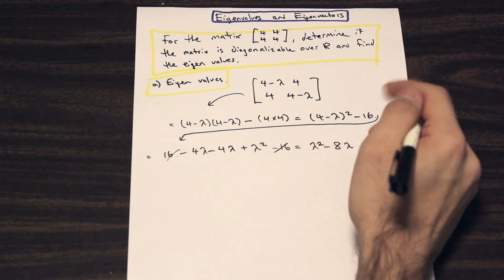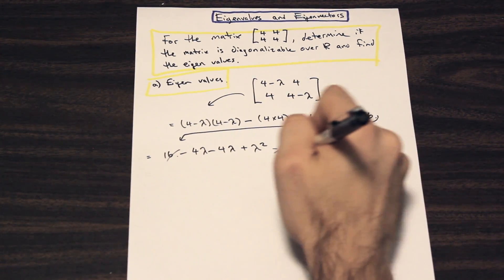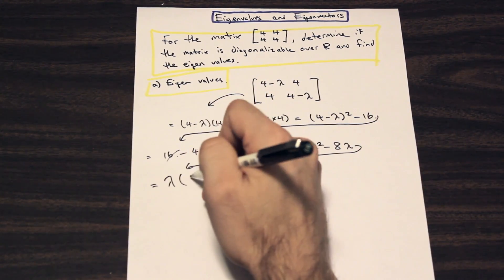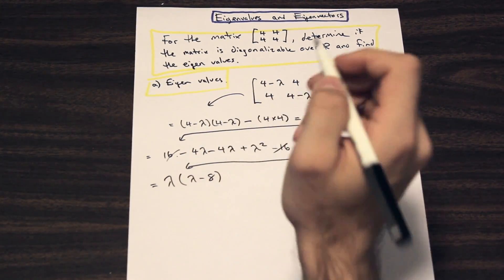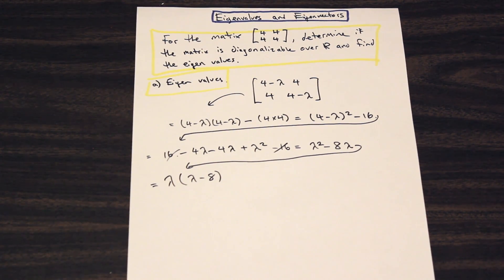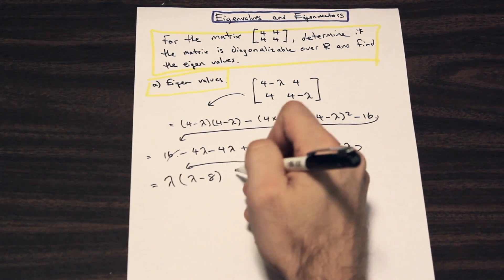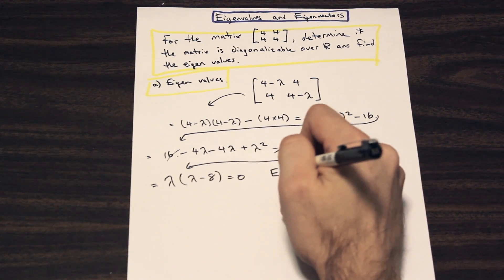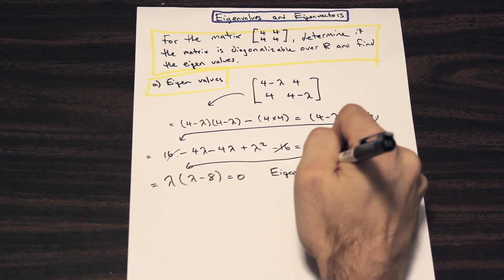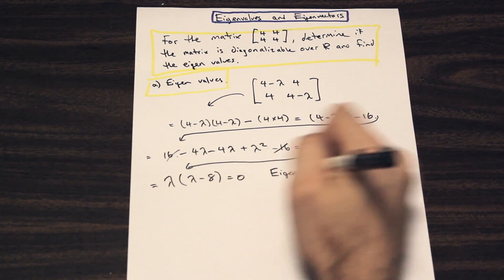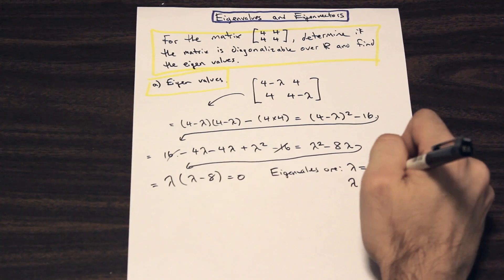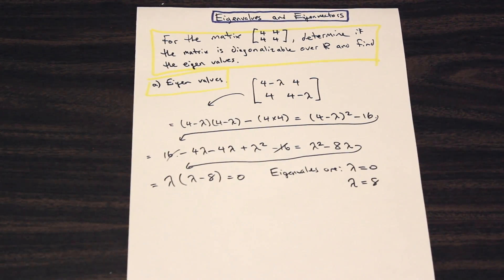That should be equal to—these are going to cancel. We're going to be left with λ² - 8λ. Now we can factor out a lambda here, right? We have λ(λ - 8). So what does that mean? This is equal to 0. Therefore, our eigenvalues are λ = 0 and λ = 8. So that's what we've done. We've solved for the eigenvalues.